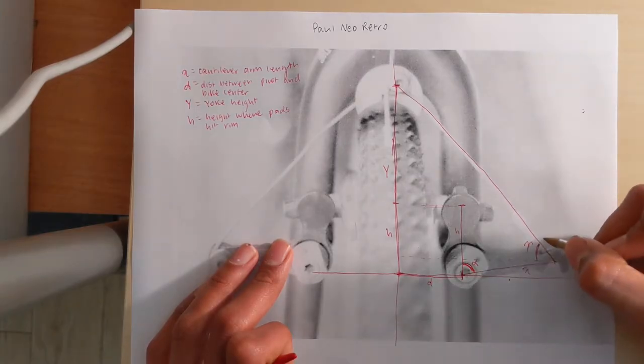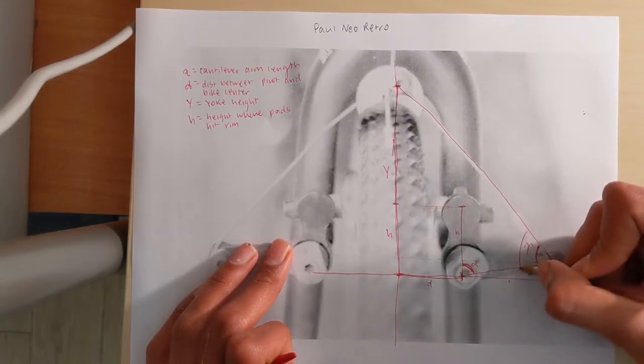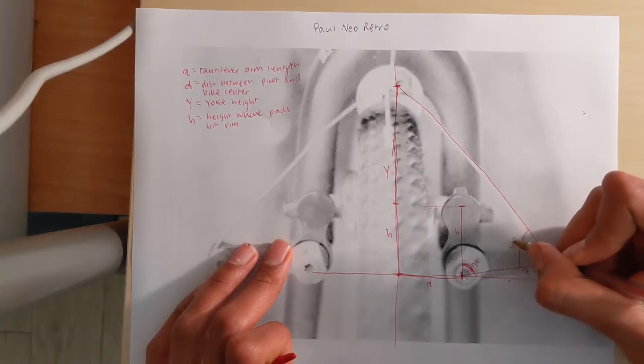While the angle between the straddle wire and the cantilever arm we're going to call beta.